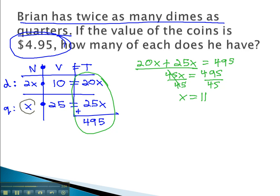Looking at our table, we see that x was the quarters. We have 11 quarters. The dimes are 2x, or 2 times 11. We have 22 dimes.